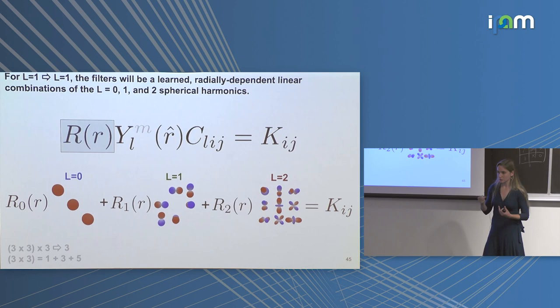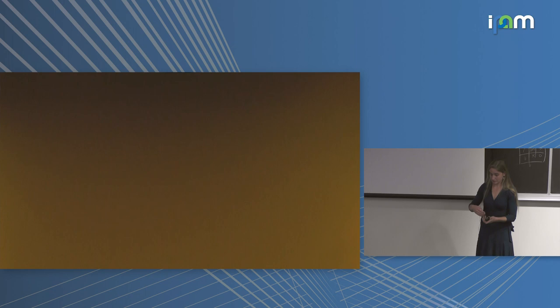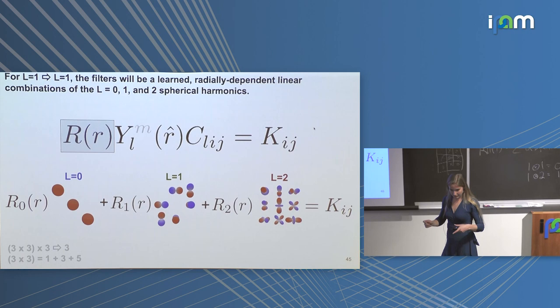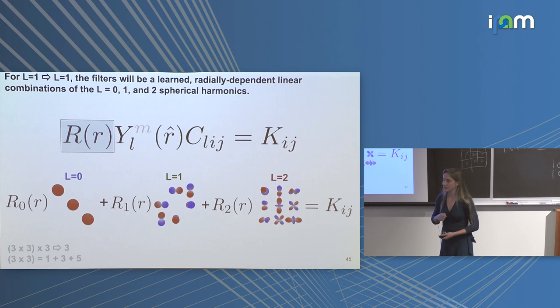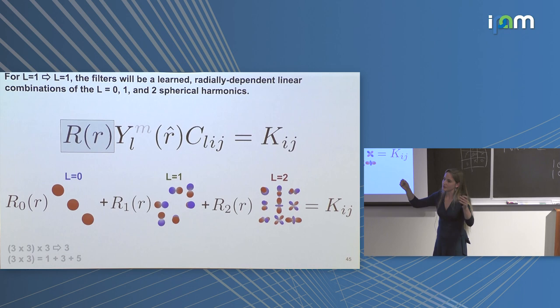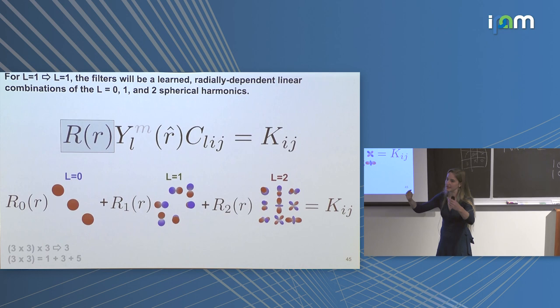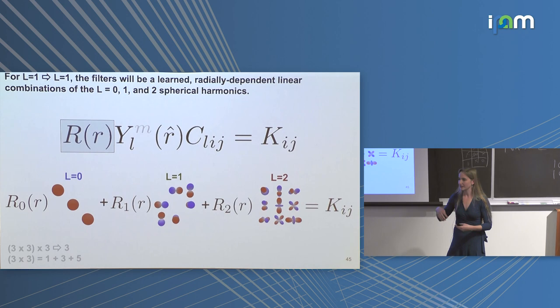Each atom gets to be the convolution center in turn, and you consider the local environment of each atom. As you go deeper into the convolutional network, it can effectively see further out: after one convolution, you update all parameters and look at neighbors again, but now it's not the original neighbor feature — it's the feature of that neighbor after seeing its own neighbors. Information propagates much like a speed of sound — at a particular rate.